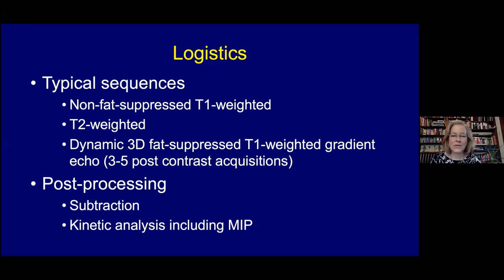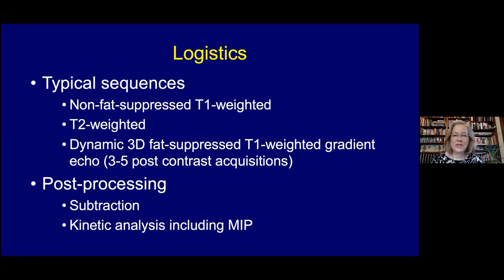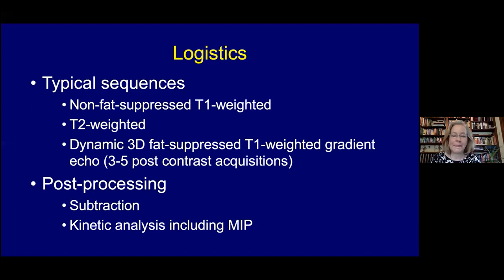Most of us do not officially offer second opinions on outside breast MRIs. The typical sequences most people use include a non-fat suppressed T1 weighted image, a T2 weighted image (with or without fat suppression), and always a dynamic sequence—most often acquired in the axial plane, though some facilities still do sagittal or coronal acquisitions. This is usually a fat-suppressed T1 weighted gradient echo sequence, with contrast administration followed by three to five post-contrast acquisitions to look at contrast uptake over time.